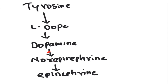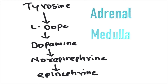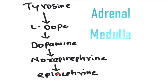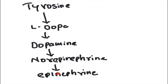In the adrenal medulla and some neurons in the central nervous system, epinephrine is made — meaning they need to express all four enzymes from tyrosine: tyrosine into L-DOPA, L-DOPA into dopamine, dopamine into norepinephrine, and norepinephrine into epinephrine.